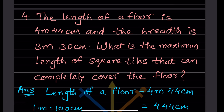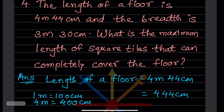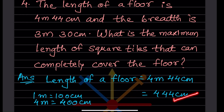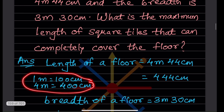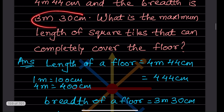Word problem: the length of a floor is 4 meters 44 centimeters and the breadth is 3 meters 30 centimeters. Find the maximum length of square tiles that can completely cover the floor. First, convert to centimeters: 4 m 44 cm = 400 + 44 = 444 cm. The length is 444 cm.